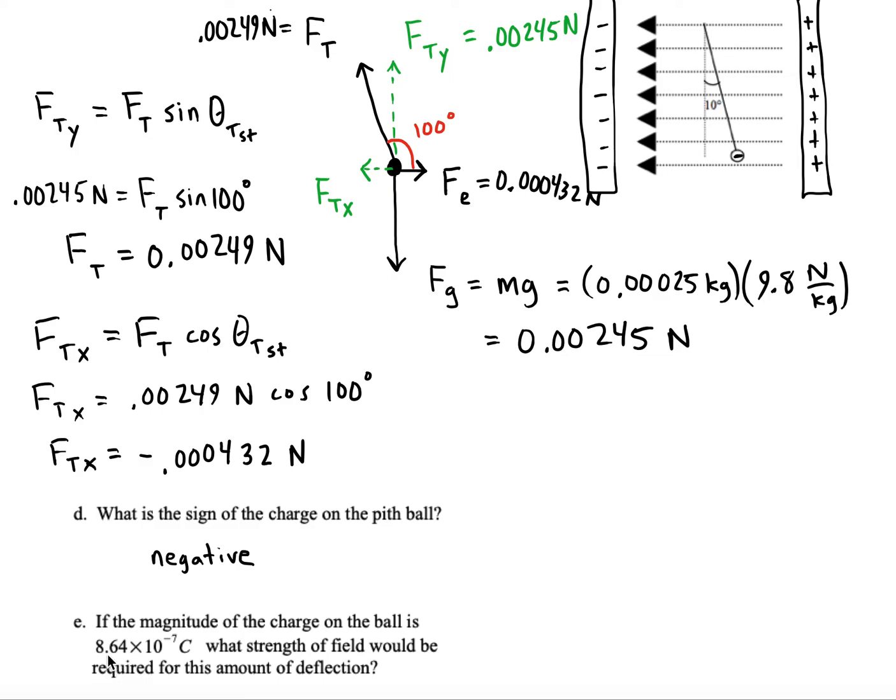Next question says if the magnitude of the charge on the pith ball is 8.64 times 10 to the minus 7 coulombs, what strength of field would be required for this deflection? For that we're going to use our formula Fe equals q E.